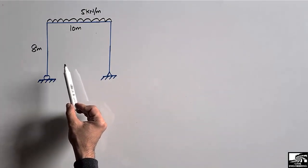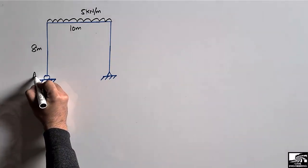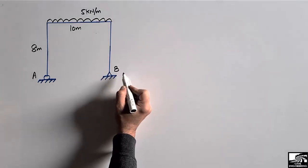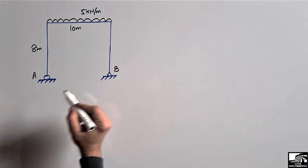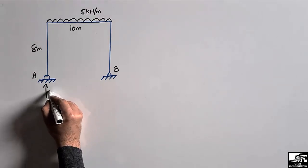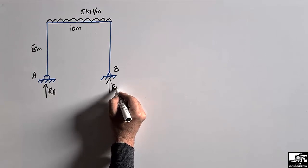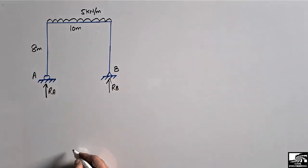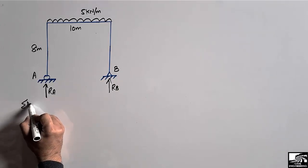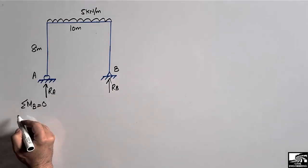Let's consider this support is represented by A and this one by B. The reaction at A will be R_A and at B will be R_B. To find these reactions, we take the summation of moments at point B equal to zero.